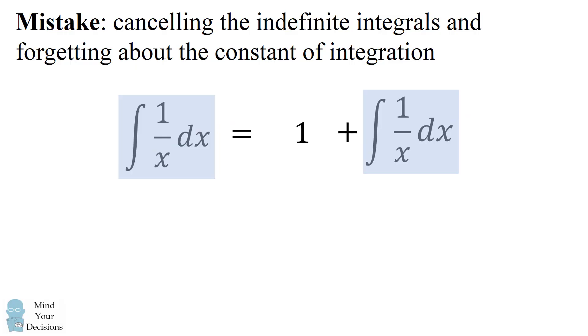To put it another way, let's suppose that the antiderivative of 1 over x is equal to some function capital F of x. When we evaluate the indefinite integral on the left hand side, it'll be capital F of x plus a lowercase c, some constant of integration. When we evaluate this indefinite integral on the right hand side, it will be the same function, but it may be a different constant of integration, which I'll denote by a capital C.